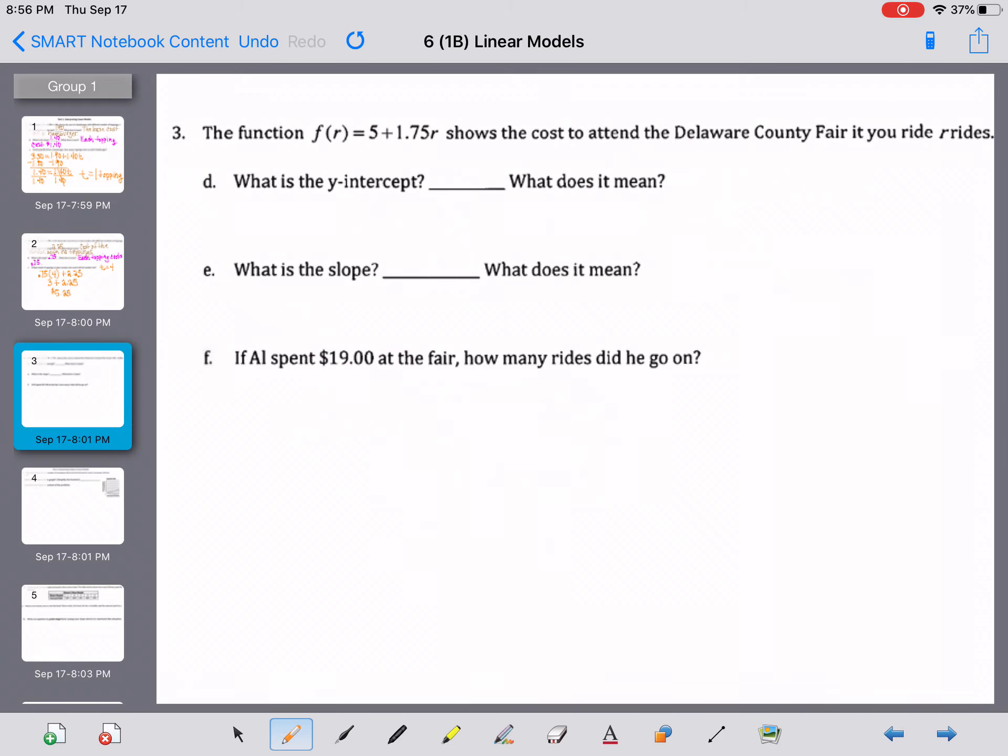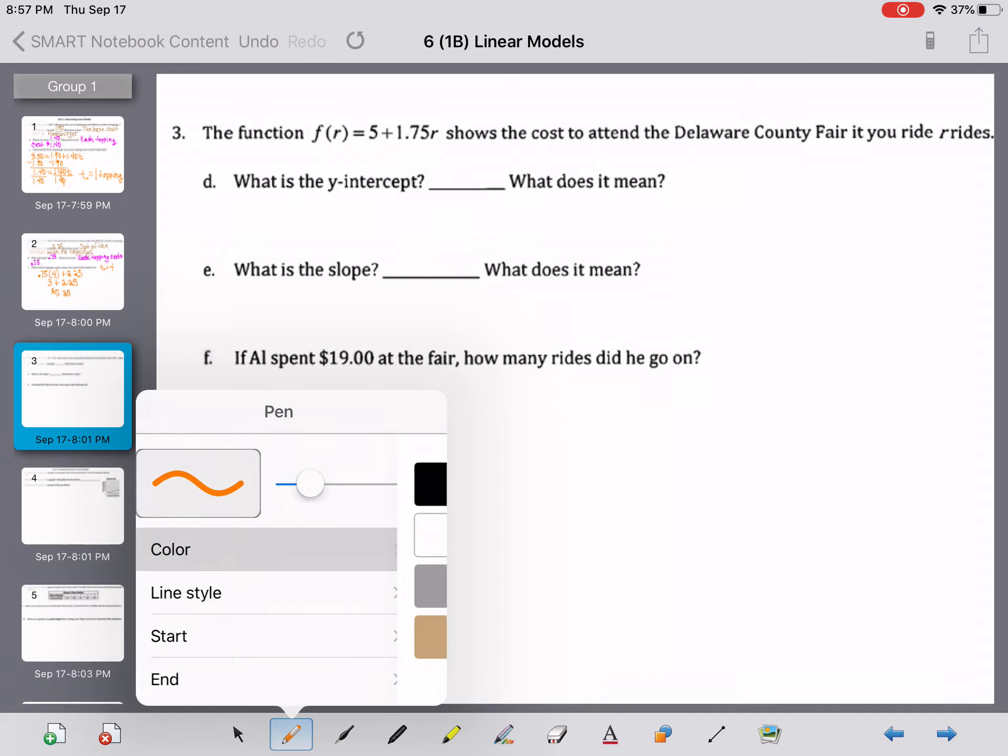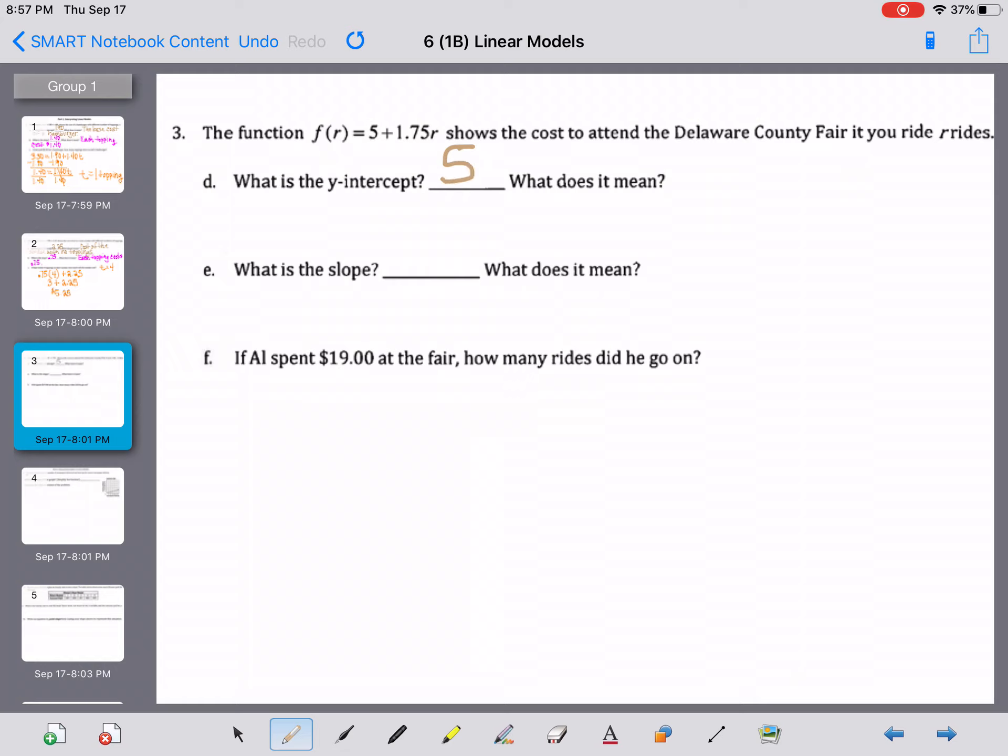So you're kind of getting the feel of things here because on this first page, we're looking at the slope, the y-intercept, and what do these values mean in these equations. So the function f(r) = 5 + 1.75r shows the cost to attend the Delaware County Fair if you ride r rides. So the y-intercept. Remember, no variable. 5. And what does that mean? It cost $5 to get into the fair.